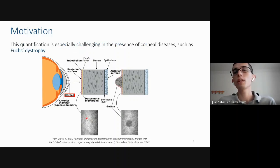This quantification of morphometry parameters is especially challenging in the presence of corneal diseases such as pops dystrophy, which is one of the most common corneal diseases. In specular microscopy it appears like dark regions, which are produced due to the accumulation of collagen produced by abnormal endothelial cells.